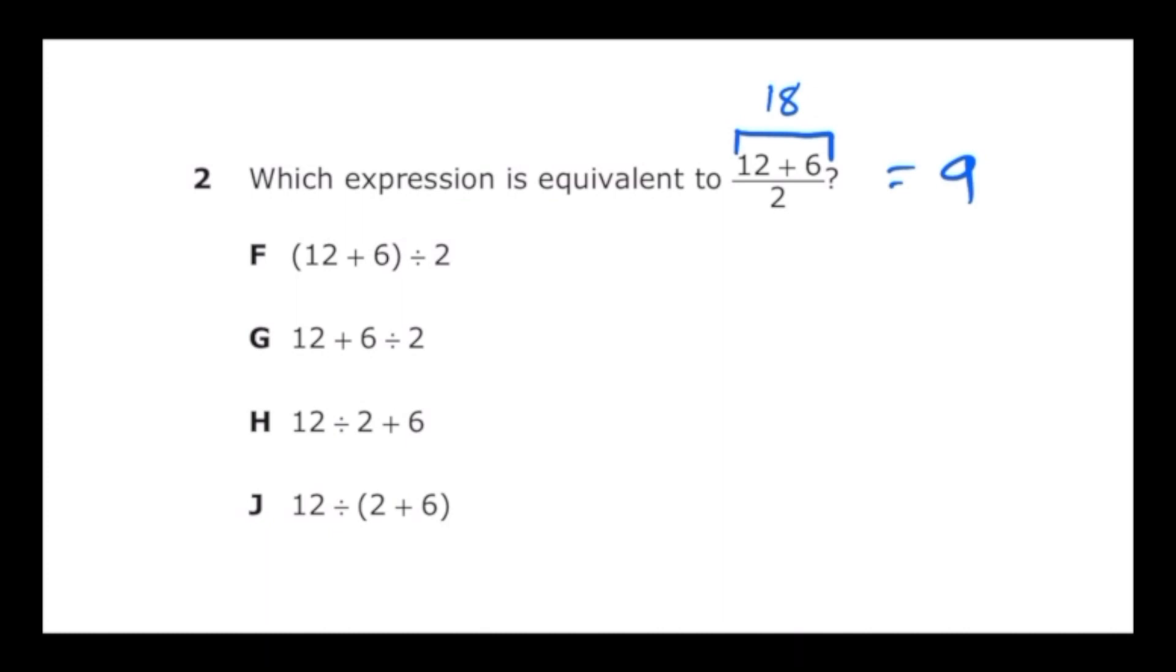So I need to find the answer choice that's equal to 9. Starting with letter F, I have to use order of operations. So inside the parentheses, 12 plus 6 is equal to 18, and then divided by 2 is equal to 9. So I'm thinking that's probably going to be my right answer. Letter G, we have to use order of operations, so we have to do 6 divided by 2 first, then we add to 12. So 6 divided by 2 is 3 plus 12 is 15, so that's definitely not going to be it.